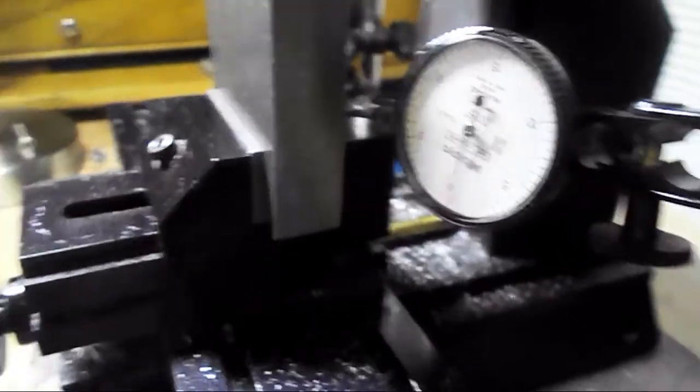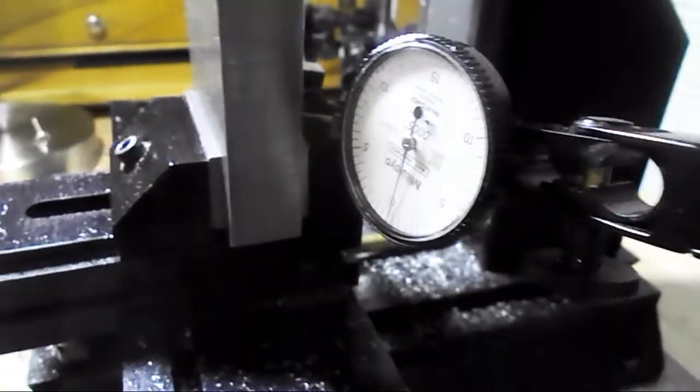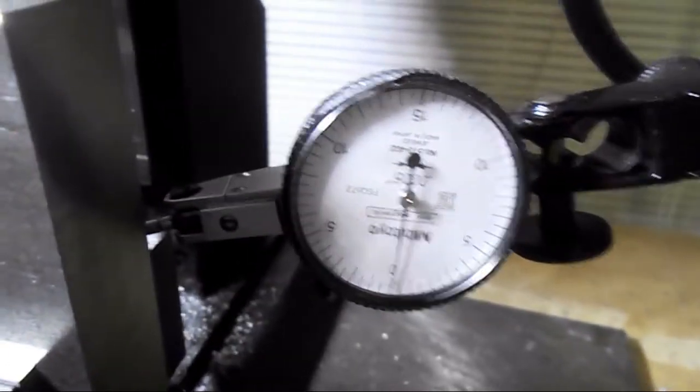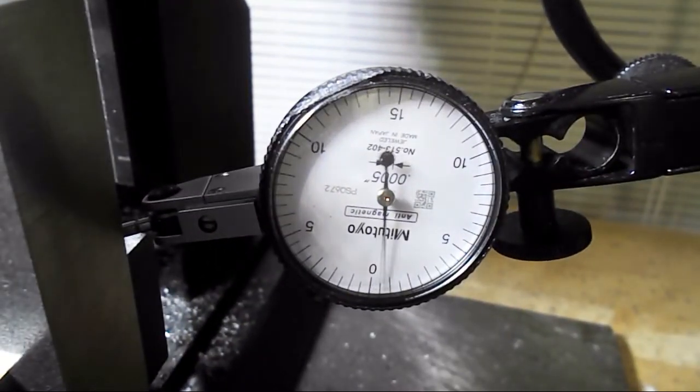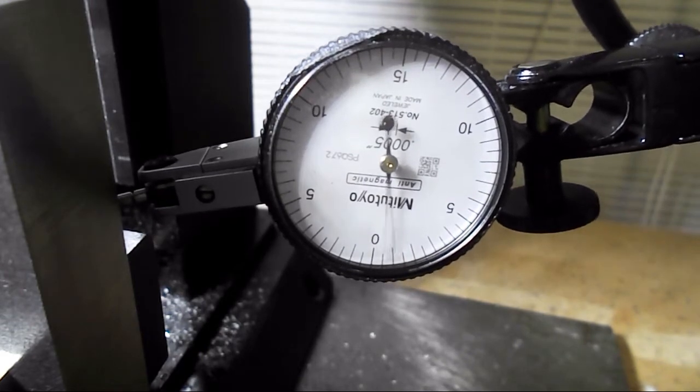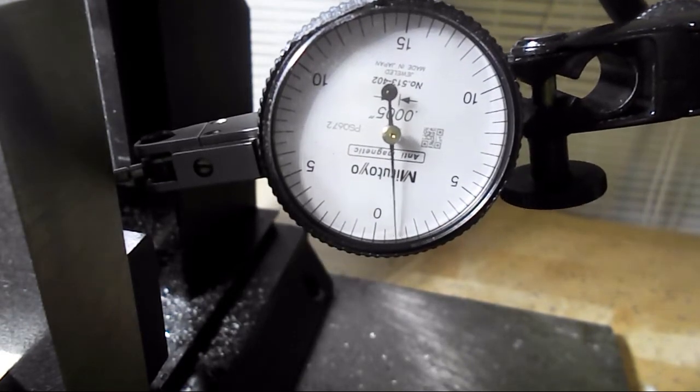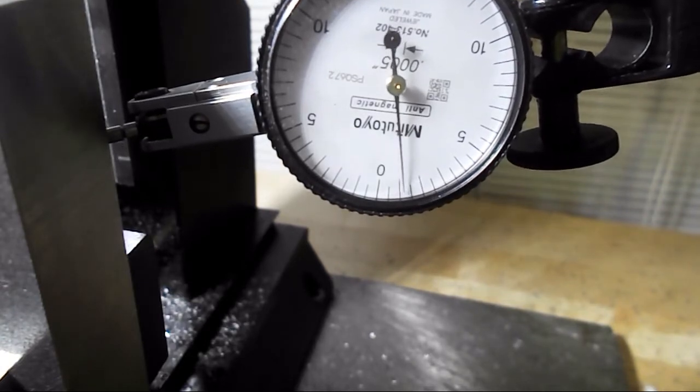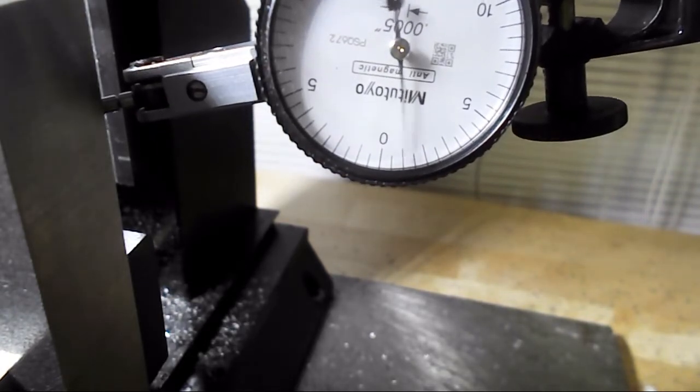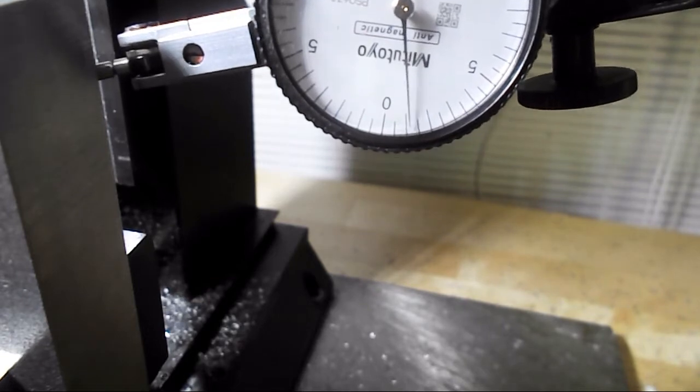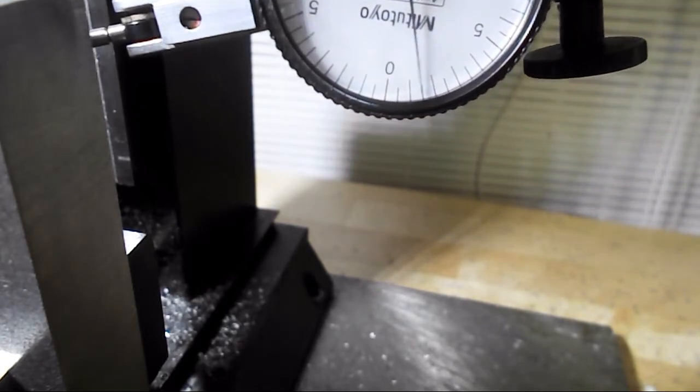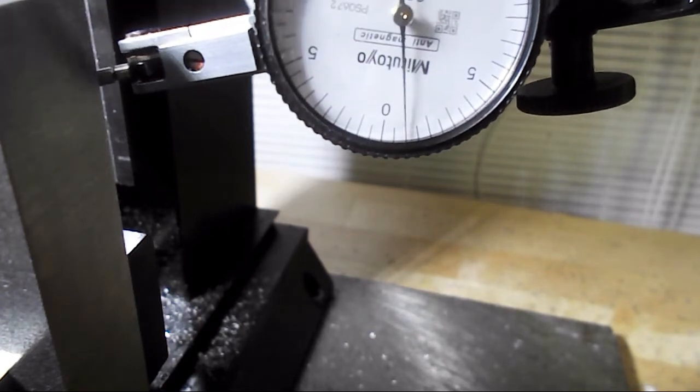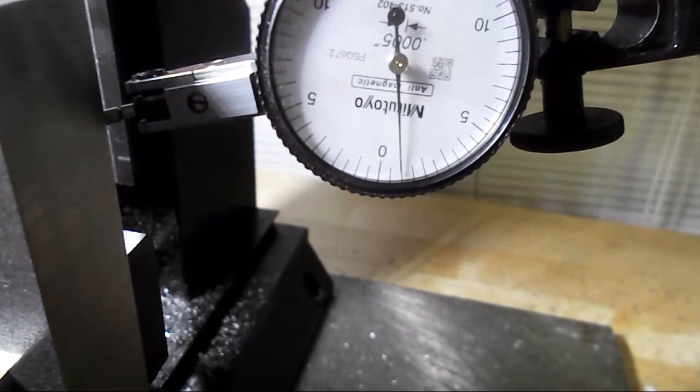I've got my indicator set up on the back side of this part here, and it's not too bad. If I run the indicator up, it stays basically within about a thousandth of an inch the whole way up. It's bouncy because of the stock surface. But if I can keep the squareness even within two thousandths for this phase of the project, that's going to be adequate for what I'm doing.